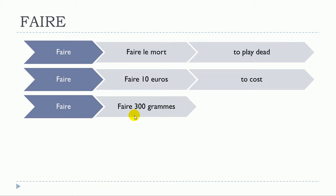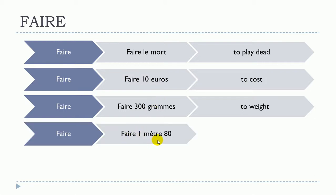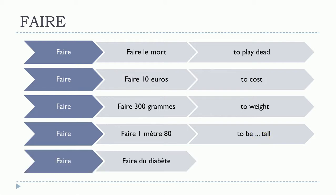It's also possible to use faire when you're talking about weight, so faire 300 grams. Then it's also possible if you want to talk about your size—in that case, when you say faire un mètre quatre-vingt, you're talking about your size, so 'to be tall'. And then faire du diabète—you can see it's also possible to use it when we're talking about medical things, and then it would be 'to have'.